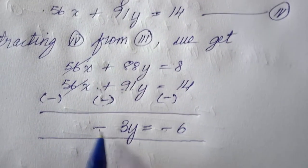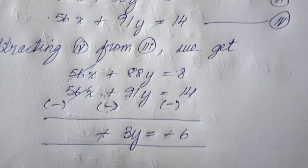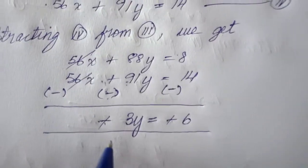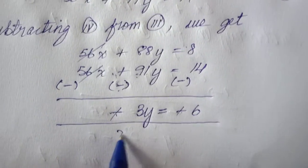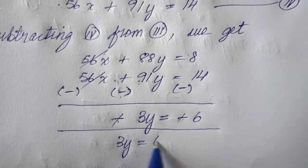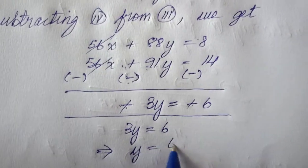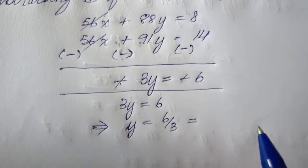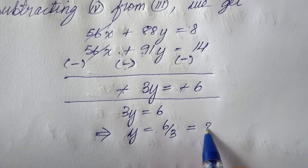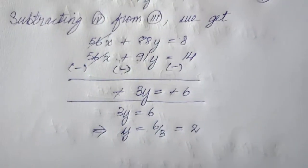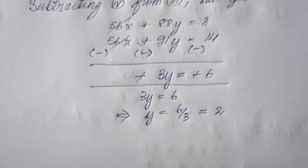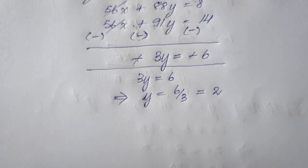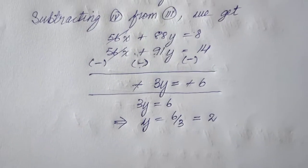Since I have minus on both the left-hand side and right-hand side, I can cancel them out, leaving 3y equal to 6, which gives y equal to 6 divided by 3, so y is equal to 2. Now that I have the value of y, I need to substitute it into one of the equations.